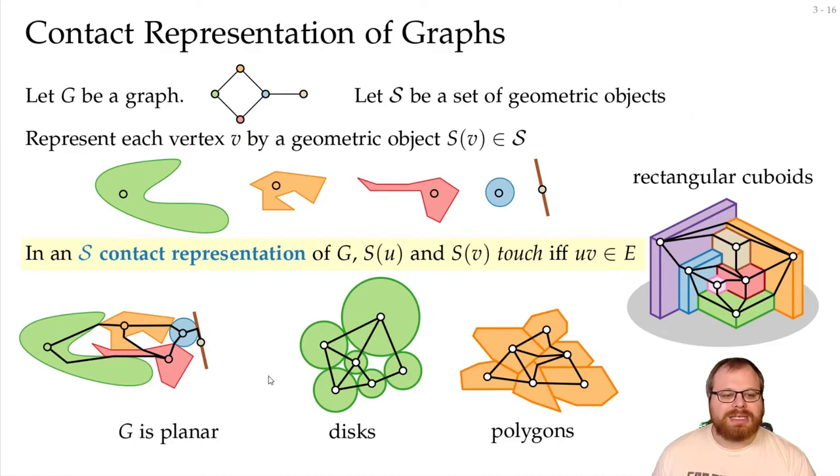It is quite easy to see that we can get a contact representation for all planar graphs. For example, we can just take the first half of every edge, and the union of those gives us a set, and then they touch if and only if we have an edge here. But there's a very old result from 1936 by Köber, who showed that you can even do every planar graph as a contact representation of disks.